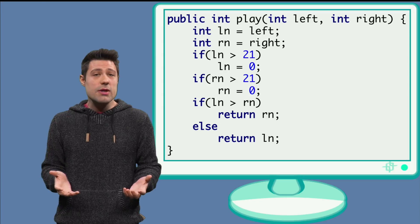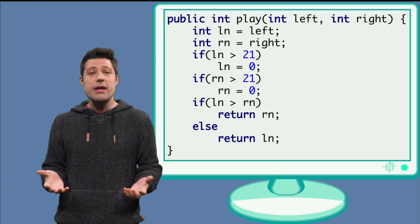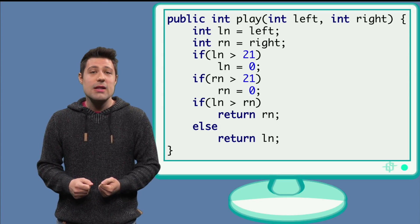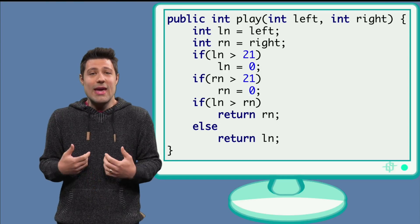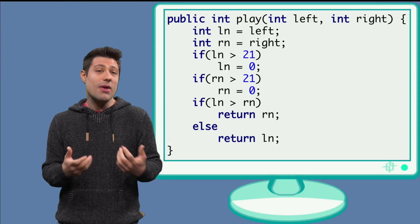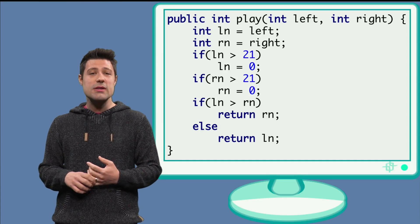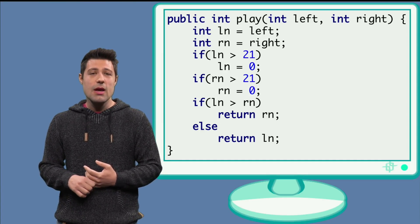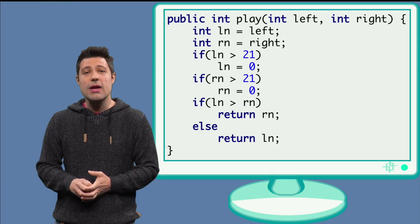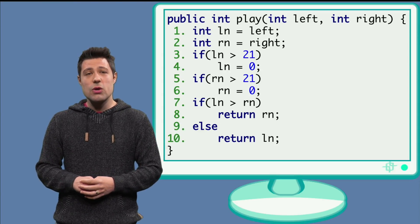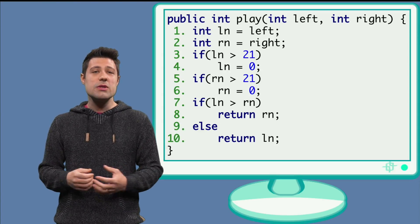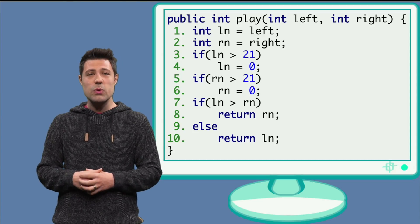A very simple one and good to get started is, for example, line coverage. Line coverage means that we will be happy with our tests when all the lines in the source code are exercised by at least one test. Our blackjack example right now has 10 lines, so this means we will be happy when all these 10 lines are exercised by at least one test.